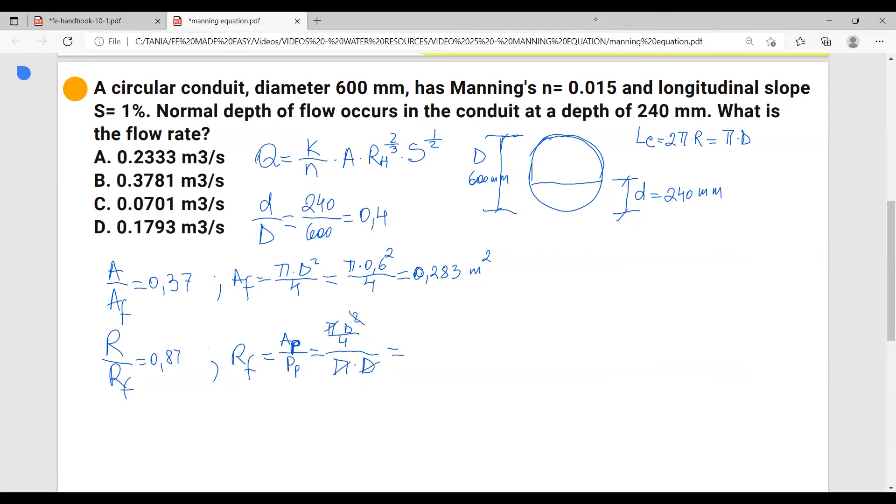So resulting that hydraulic radius for this pipe, if it was filled out with water, it would be d over 4.